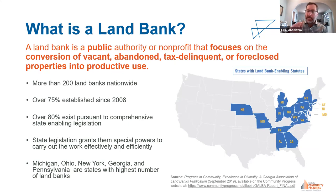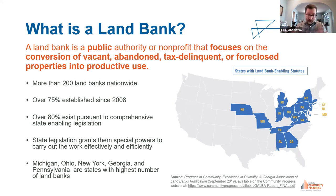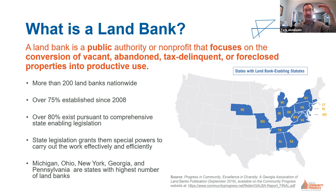There are a couple of states with land bank legislation that are not highlighted on the map. Kentucky has land bank legislation that allows Louisville very weak powers, and Kansas also has some land bank legislation at the state level. Sometimes the powers are so minimal that the land bank legislation does very little to help intervene in the tax foreclosure process cost-effectively. This map seems to suggest that every state's legislation is equal, and it certainly is not — there are definitely ones that are more optimal and ones that are very deficient.